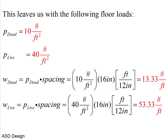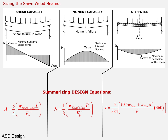Converting pressures to linear loads using W = P × spacing: W_dead = 10 psf × (16 in / 12) = 13.33 lb/ft. W_live = 40 psf × (16 in / 12) = 53.33 lb/ft. Total W = 66.67 lb/ft, which goes into both the shear and bending equations. For the deflection equation, the load is 53.33 + 0.5 × 13.33 = 60 lb/ft approximately.